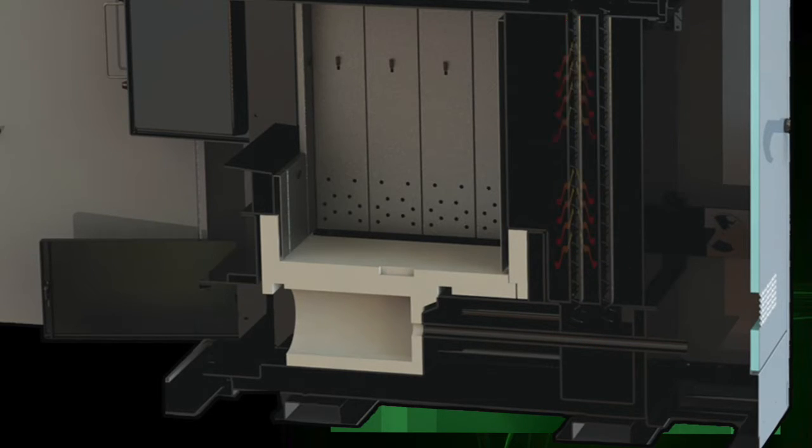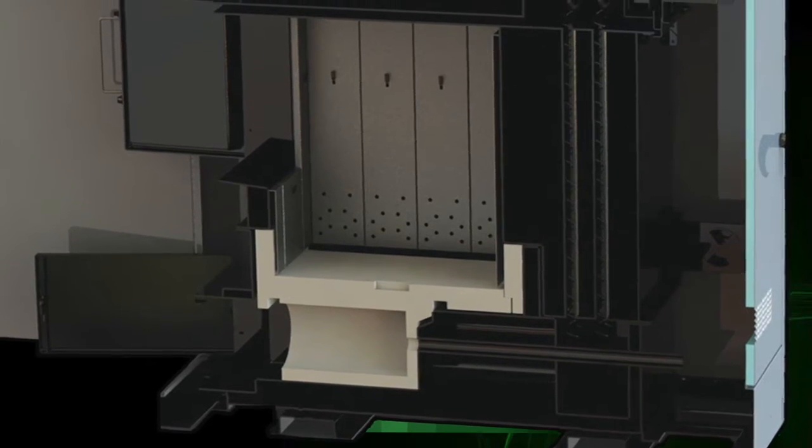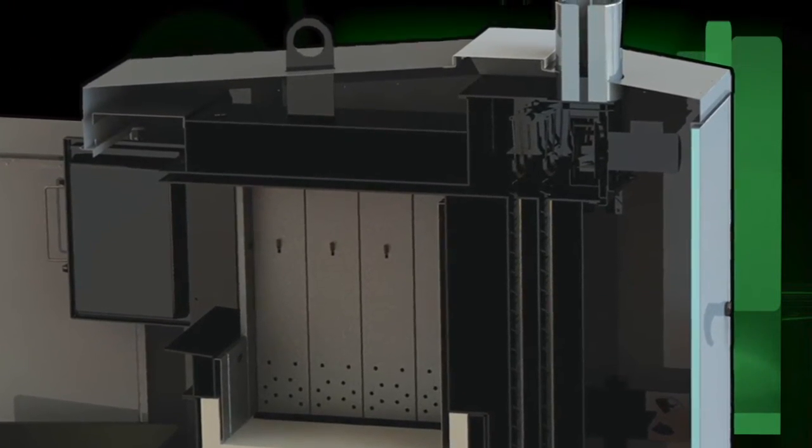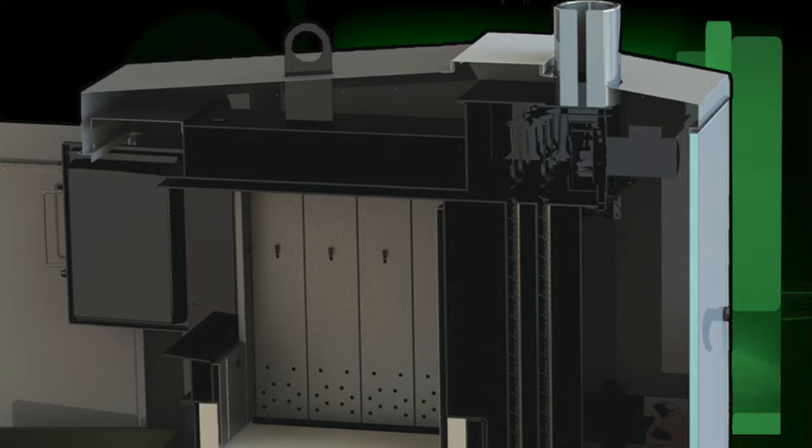When the heat reaches the end of the horizontal flue tubes, it does a 90 degree turn inside the water-surrounded exit junction chamber. Now the heat heads up the vertical flue tubes, transferring as much heat as possible into the water-surrounded vertical tubes.